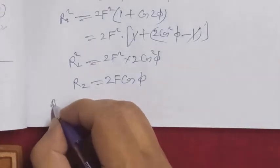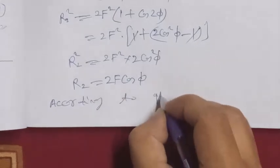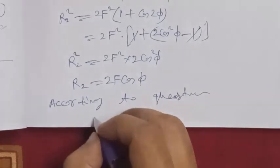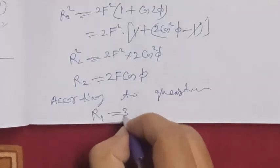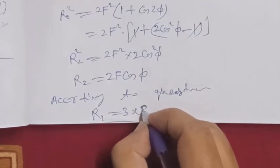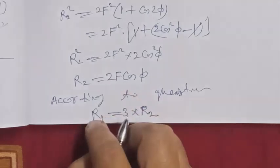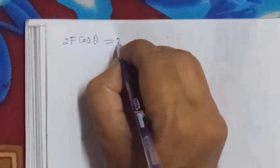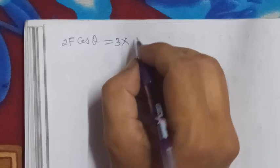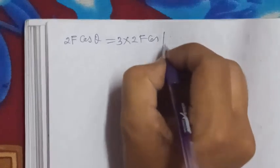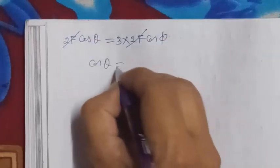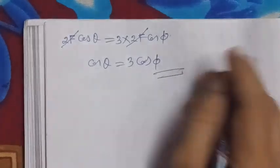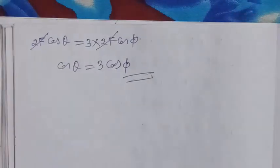According to the question, the resultant in the first case is three times the resultant in the second case. So we put R1 equals 3 times R2: 2F cos theta equals 3 times 2F cos phi. The 2F cancels out and we get cos theta equals 3 cos phi, which is the required result. Thank you very much for listening. Alhamdulillah Rabbil Alameen.